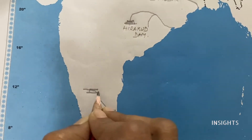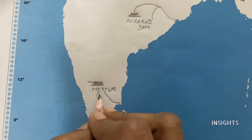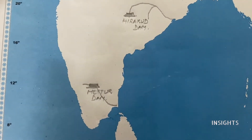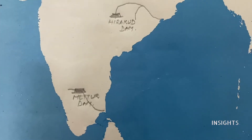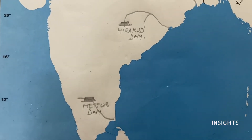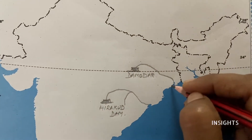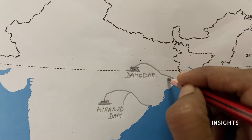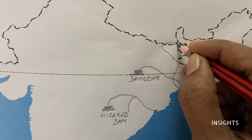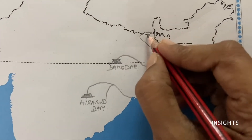Apart from the dams, we have to mark jute cultivation. Jute cultivation is happening in the state of West Bengal. We just have to draw it tentatively over the whole area and shade it.